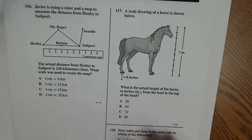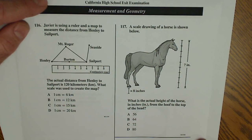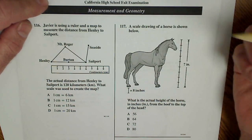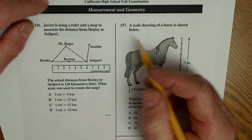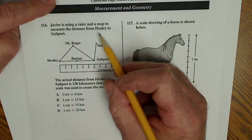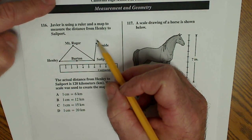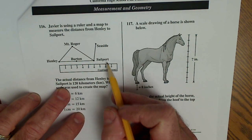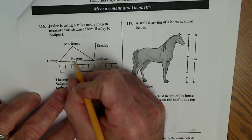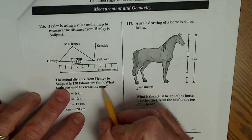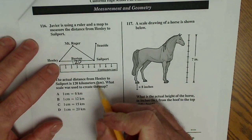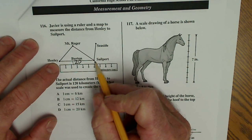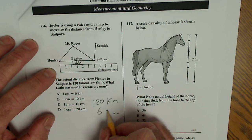We skip ahead to the geometric reasoning portion and measurement of the seven essentials and of the high school exit exam. So this problem here, Javier is using a ruler and a map to measure the distance. Okay. The actual distance from Henley to Sailport is 120. I want to write that on there. And what's the scale used to create the map?